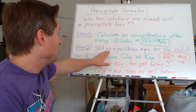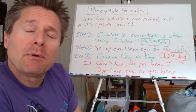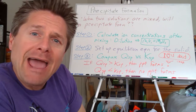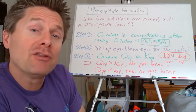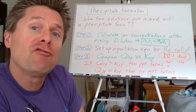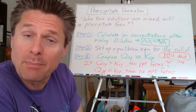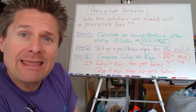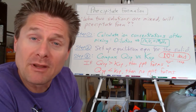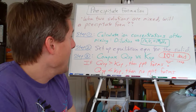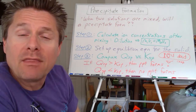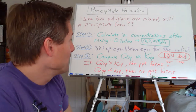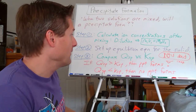Step two: set up the equilibrium equation. Think about the combinations of the cations and anions — you'll get one combination that could potentially form a precipitate, a solid. Identify the solid's chemical formula, look it up on the Ksp table to confirm, and write the equilibrium equation for that solid.